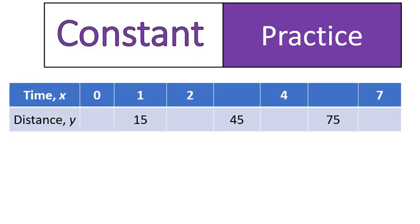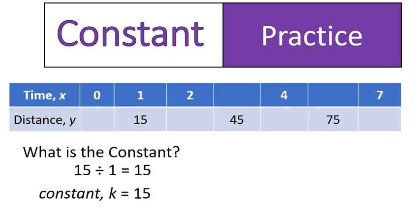So let's do it. First off, we have to find the constant. And we can use the one column we have there, 1 and 15 is the only one that gives us both numbers, both the x value and the y value. So that's the one we're going to have to use to find our constant. We'll take our y value divided by our x value, or 15 divided by 1 gives us 15. 15 is our constant.